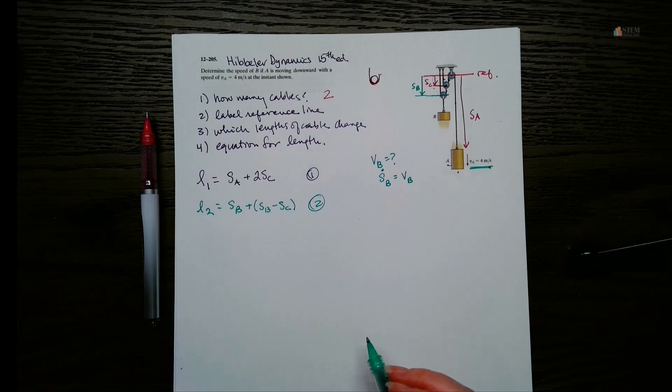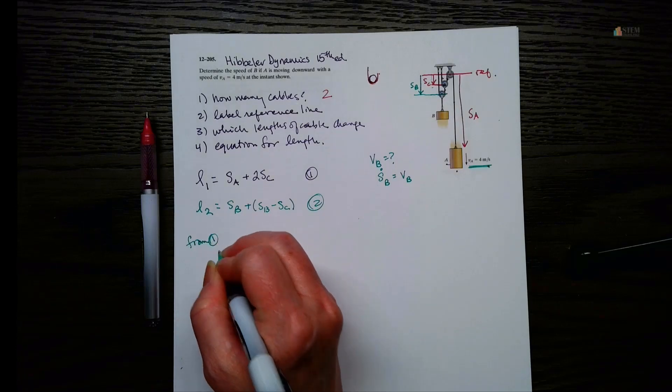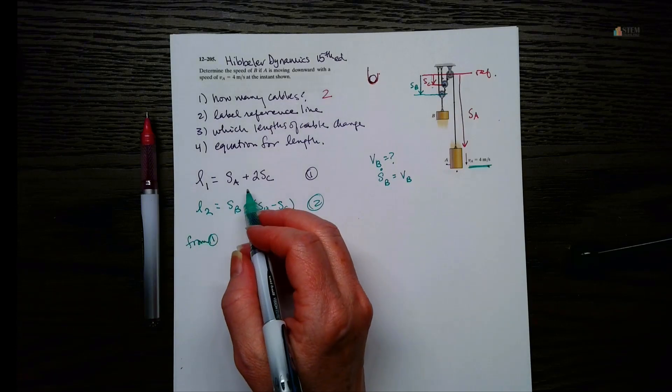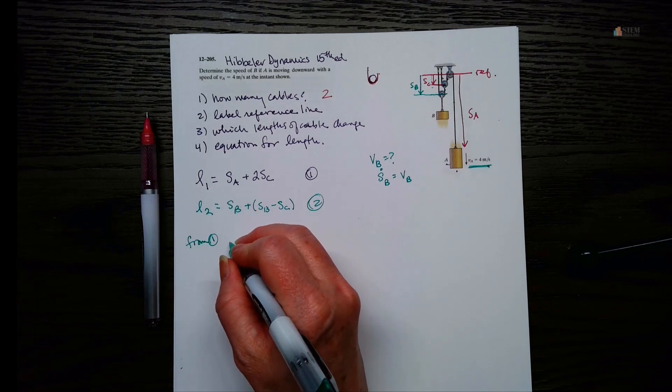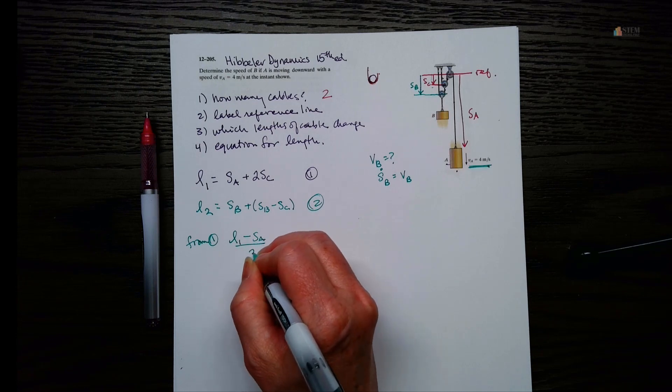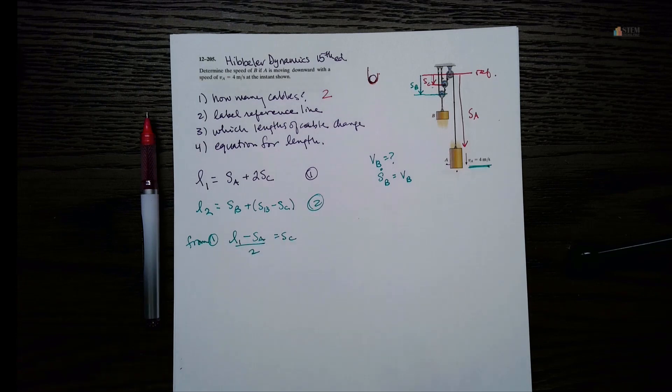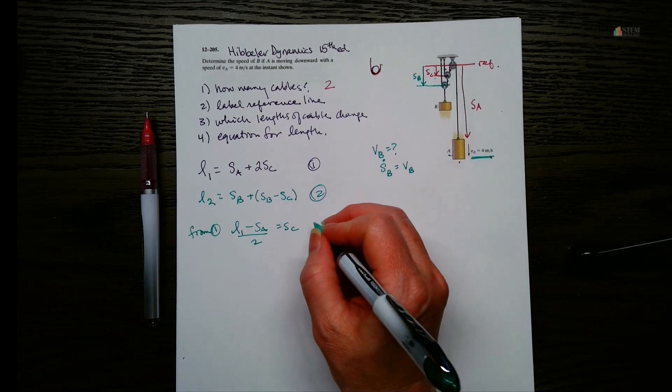And then we'll get rid of that. So let's do that step. So from one, let's go ahead and we can solve. So L1 minus SA over 2 is SC. And then now let's plug this into equation two.